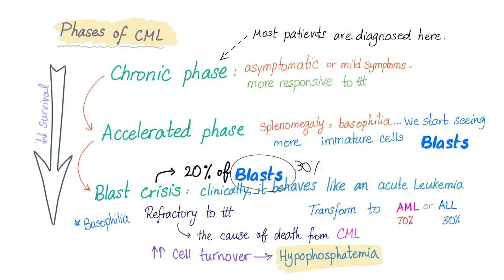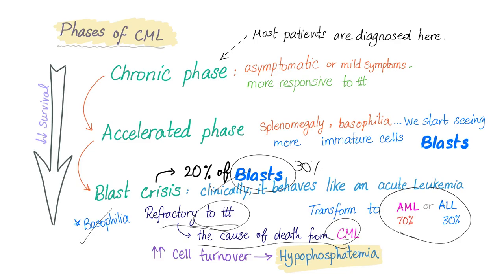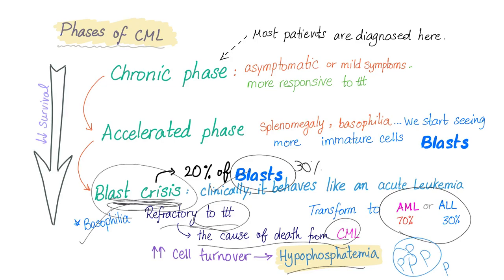When you see lots of blasts, this is by definition acute leukemia, and clinically it behaves as an acute leukemia. This is refractory to treatment — you have blasts and basophilia — and since it's refractory to treatment, this is the cause of death from CML. Due to rapid cell turnover in this phase, you'll have hyperphosphatemia, because phosphate is more prevalent inside the cell than outside. Rapid cell turnover will lead to phosphate exiting the cell as these cells rupture.